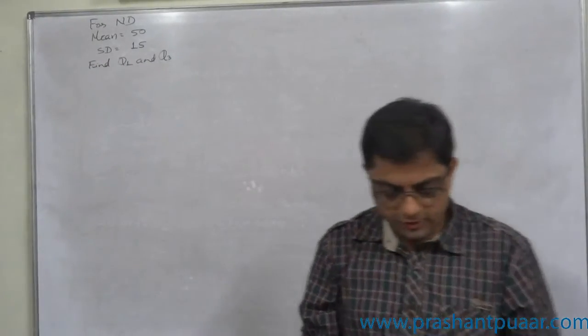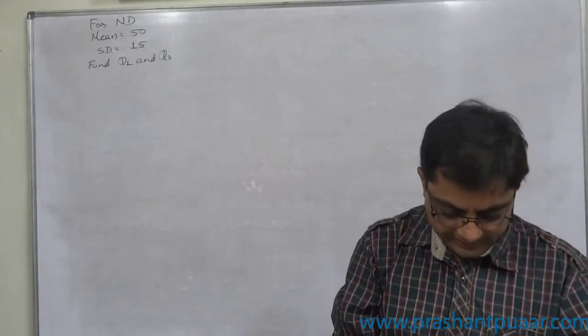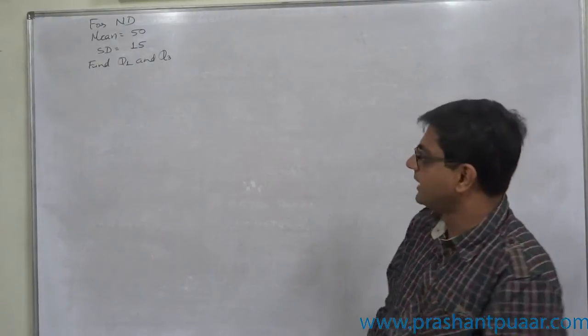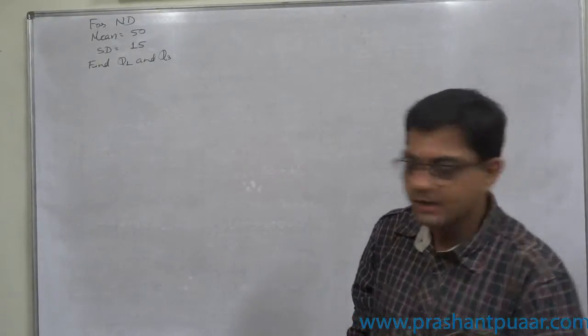For a normal distribution with mean 50 and standard deviation 15, find out Q1 and Q3.